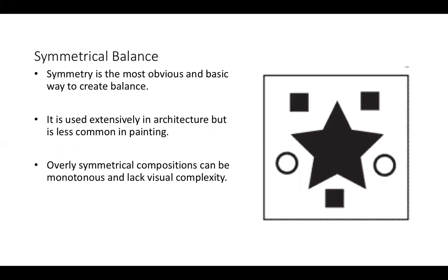Ways of achieving balance using this structure: the most obvious and basic way is to use symmetry. Architecture uses it a great deal but you don't see it as much in painting. The reason is that overly symmetrical compositions can be monotonous and lack visual complexity. If used unimaginatively, they really aren't going to give you much creative mileage as an artist unless you find ways to use it creatively. So symmetry is generally problematic for artists.